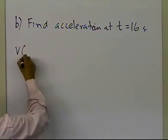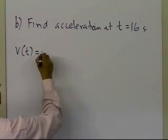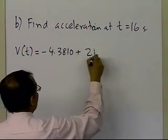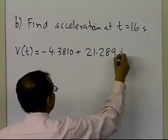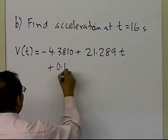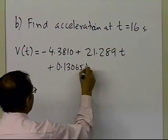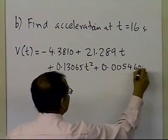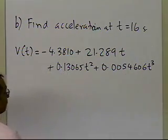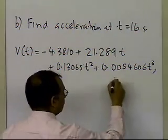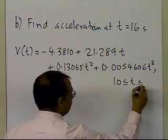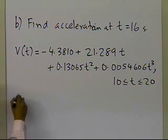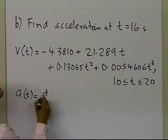I'm going to write down my velocity, which is minus 4.3810 plus 21.289t plus 0.13065t squared plus 0.0054606t cubed. Again, this particular interpolant is valid between 10 and 20, so I can use it to find the acceleration at 16. But to do that, I'll have to take the derivative of the velocity.